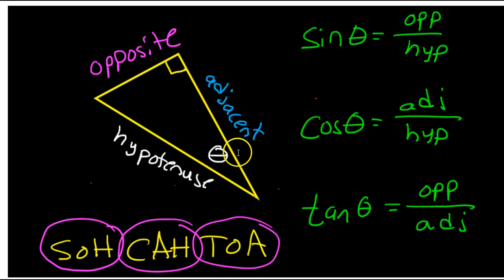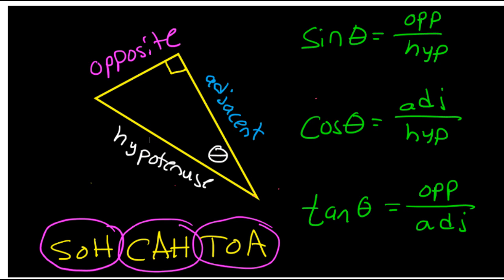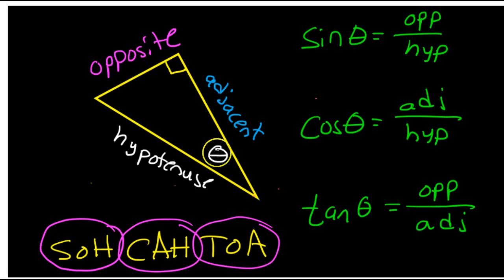If you have a right triangle, the hypotenuse is always going to be across from the 90 degree angle. Now, if you pick one of the other angles, like theta here, across from that angle is called the opposite leg. Right next to the angle is called the adjacent leg.